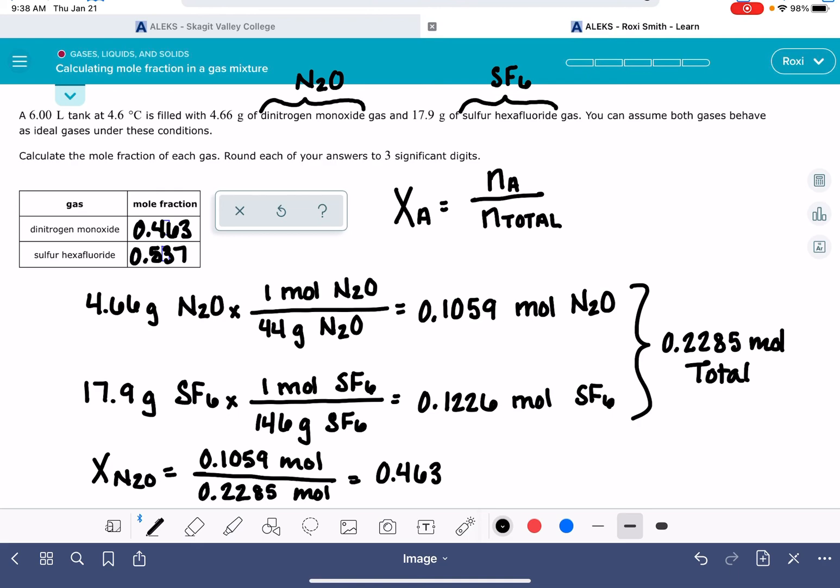But it's always a good idea to just double check that calculation to actually do the math on it. It's one way of verifying that you've got your answer correct. So the mole fraction of SF6 is 0.1226 moles divided by our total moles, 0.2285. And my calculator says 0.537. So it looks like I probably did this correctly.